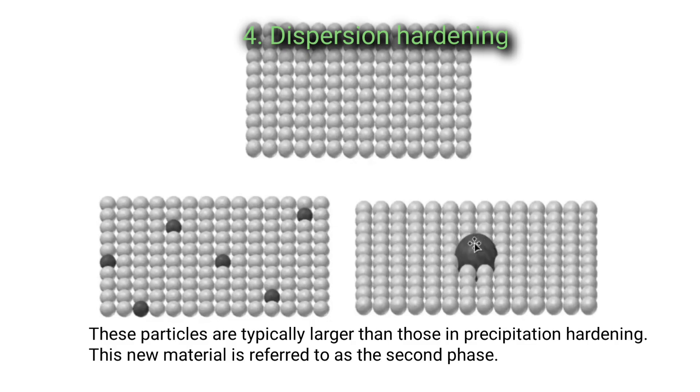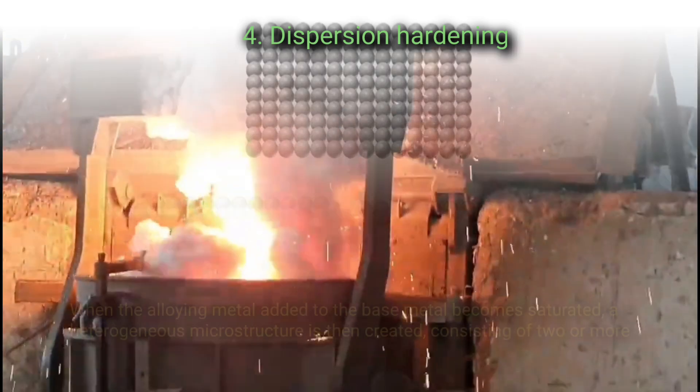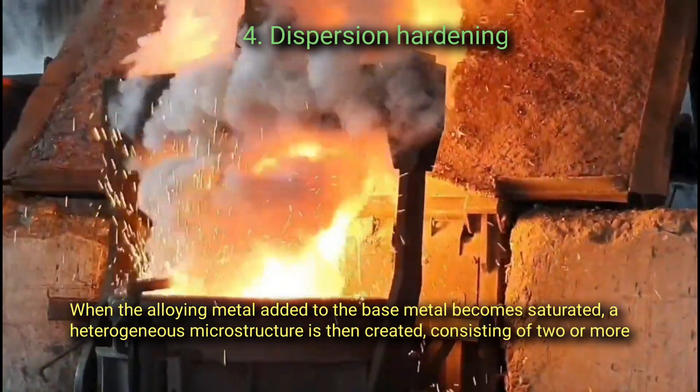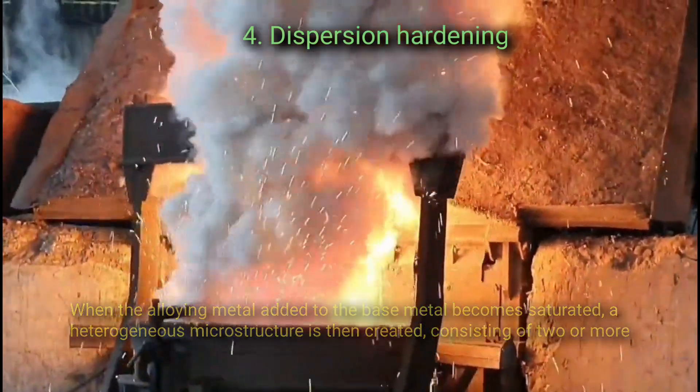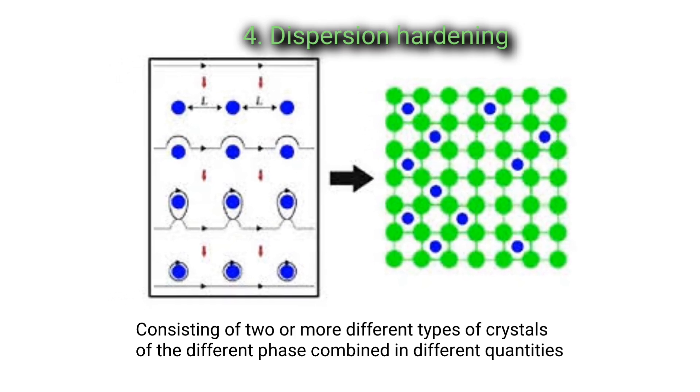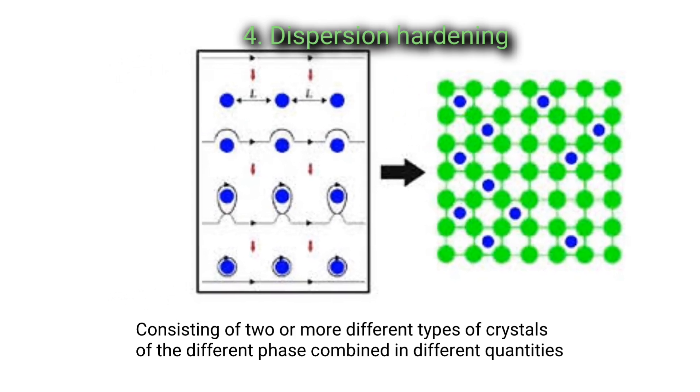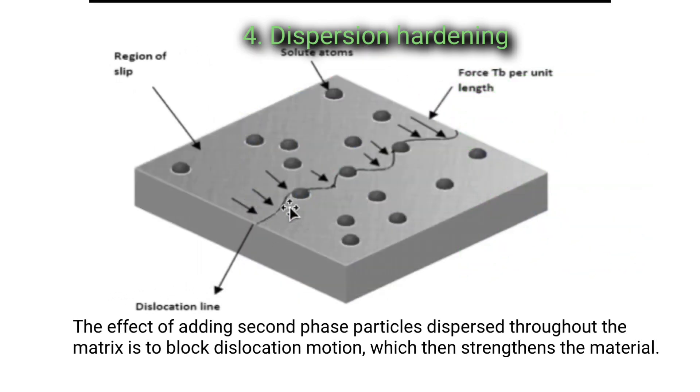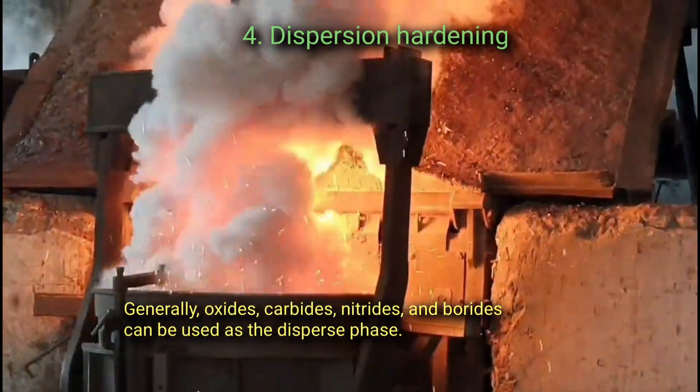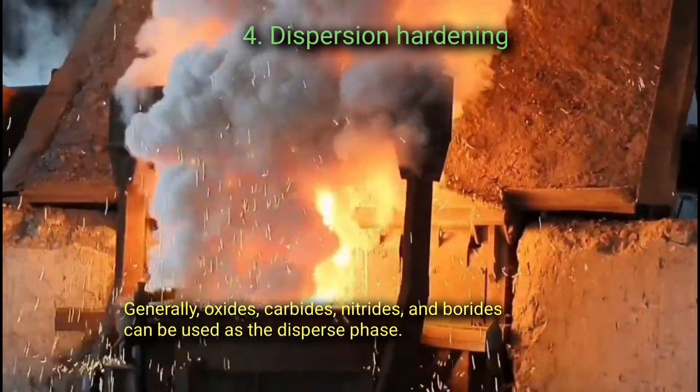This new material is referred to as the second phase. When the alloying metal added to the base metal becomes saturated, a heterogeneous microstructure is then created, consisting of two or more different types of crystals of the different phases combined in different quantities. The effect of adding second phase particles dispersed throughout the matrix is to block dislocation motion, which then strengthens the material. Generally, oxides, carbides, nitrides, and borides can be used as the disperse phase.